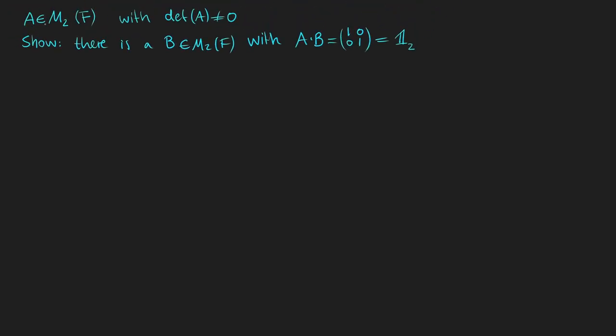There is a 2x2 matrix A and the determinant of A is not equal to 0. Now we need to show that there is also a 2x2 matrix called B such that A times B is the identity matrix.